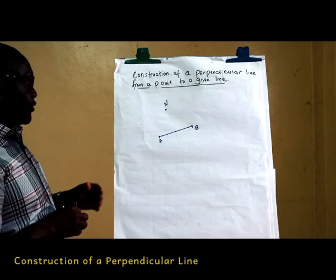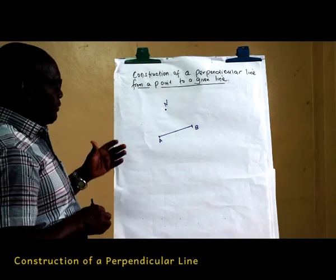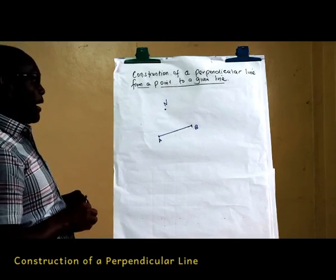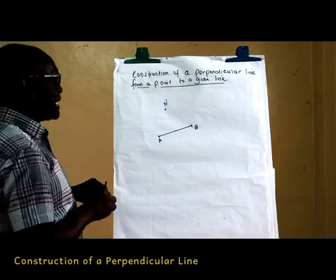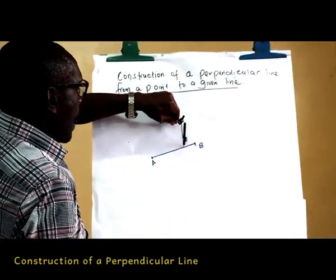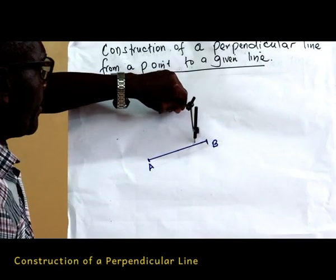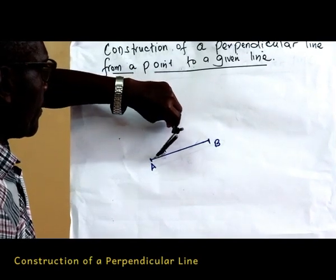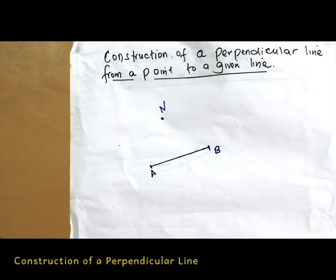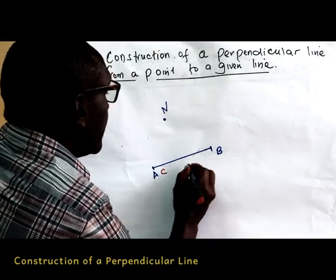Now let's consider point N and line AB where we need a perpendicular from N to AB. Now with N as a center, using a suitable radius, construct two arcs on AB, cutting AB at points C and D.